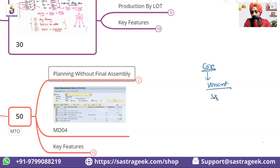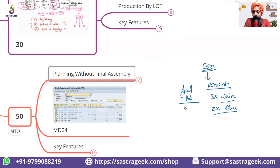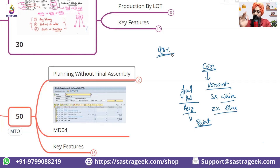For example, SX white and ZX blue. Based on the color and variant, your final product and the final operation of paint will change. But 90% of the components and assemblies will be the same — same engine, same chassis, same tires, same axle. So 90 to 98% of components are already the same and the pre-assembly is already done.